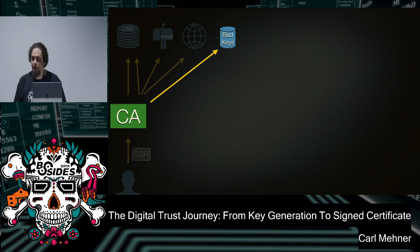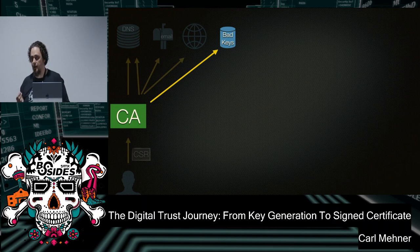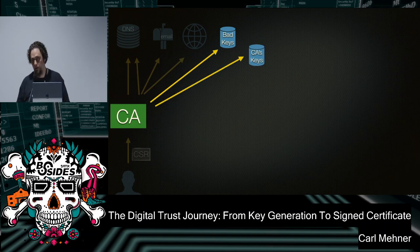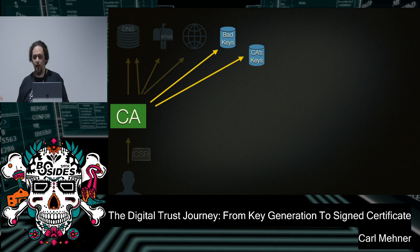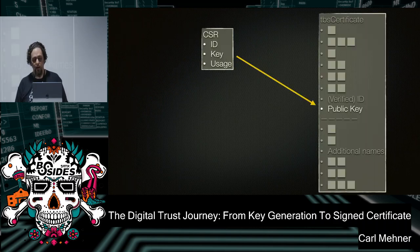CAs have to do their part to make sure they're trying to keep weak keys off the internet. For server certs, the certificate authority is not allowed to generate the private key. One of the other checks it has to do is make sure it has never generated the private key associated with the public key in the CSR. You can ask the CA to generate a private key for an email cert and download the whole package, but not so with web certs. If it doesn't find the private key in the database, it can take that key from the CSR and slide it over into the TBS certificate.